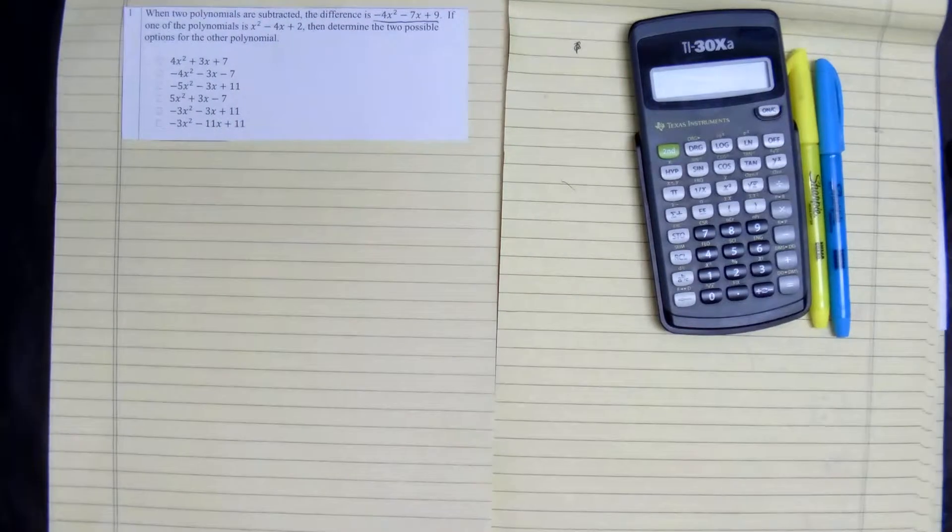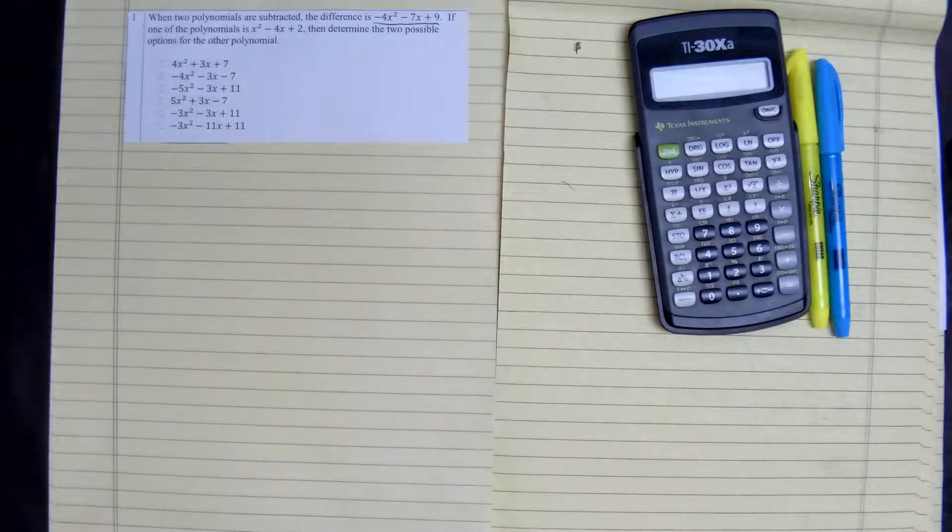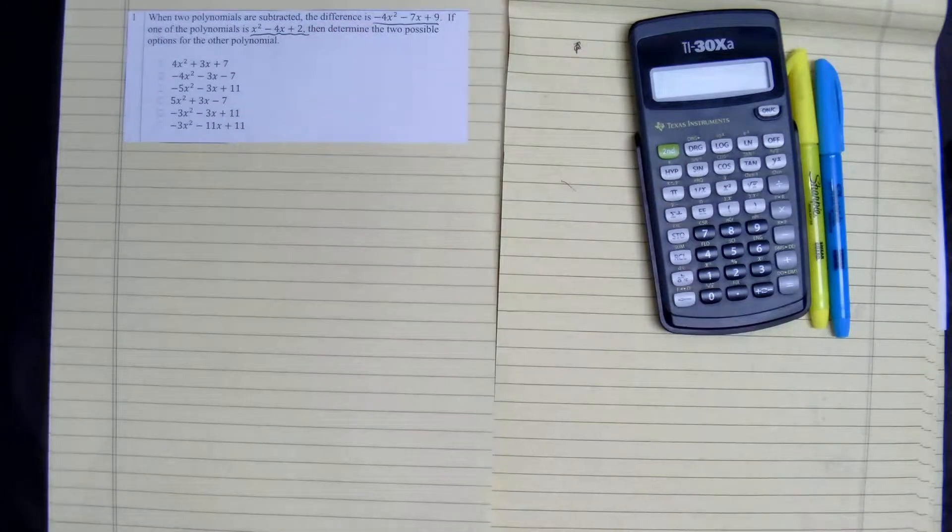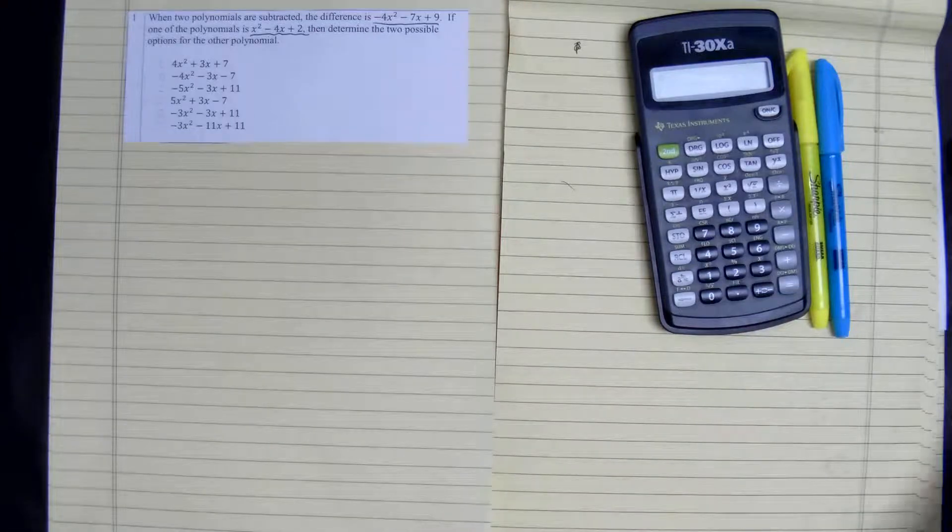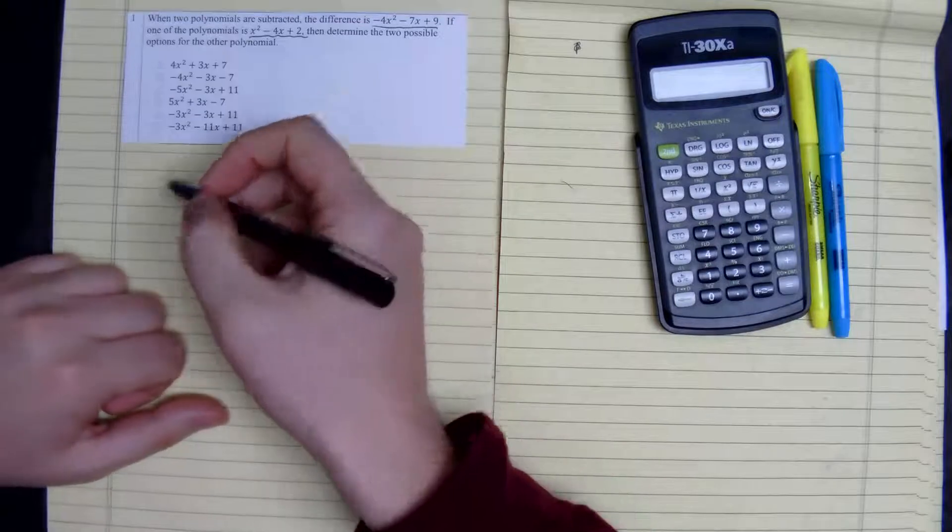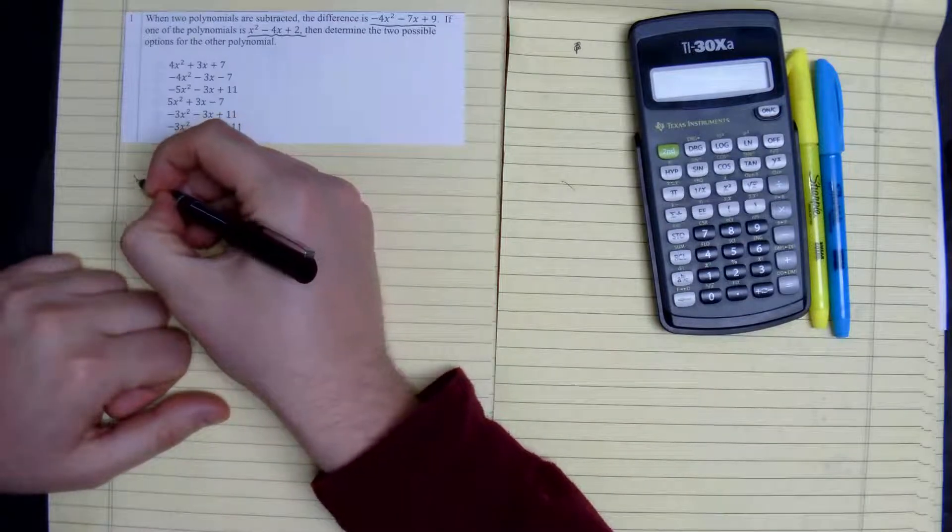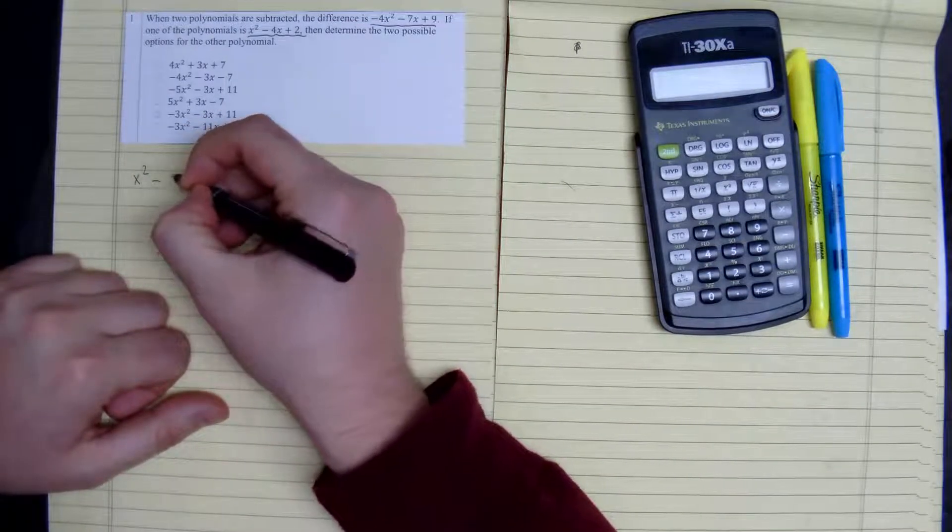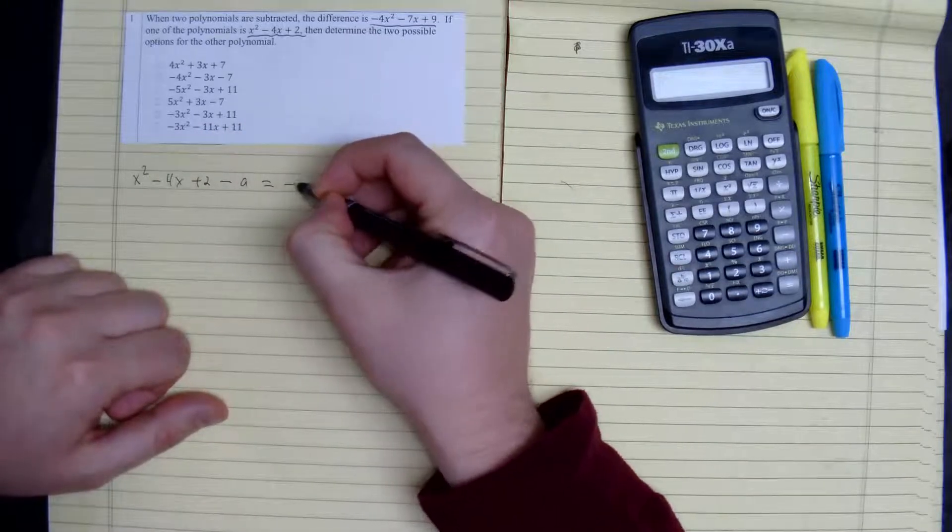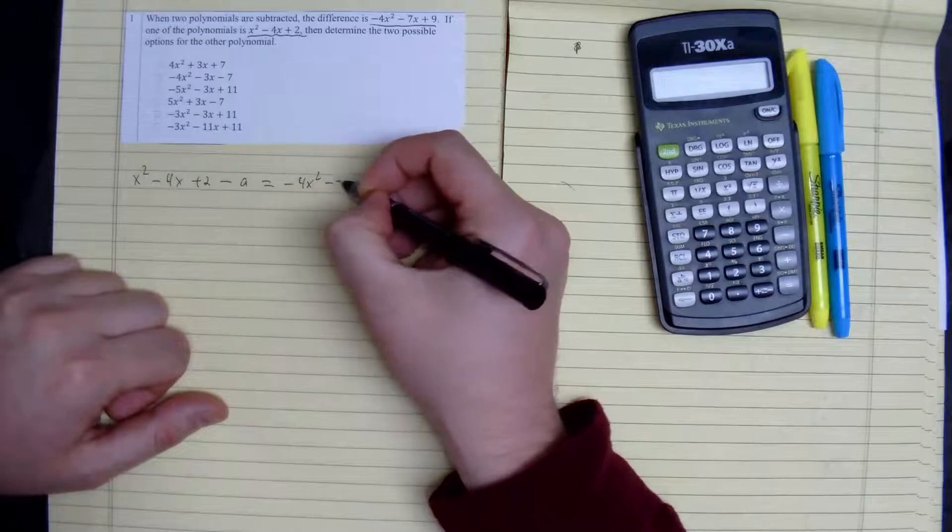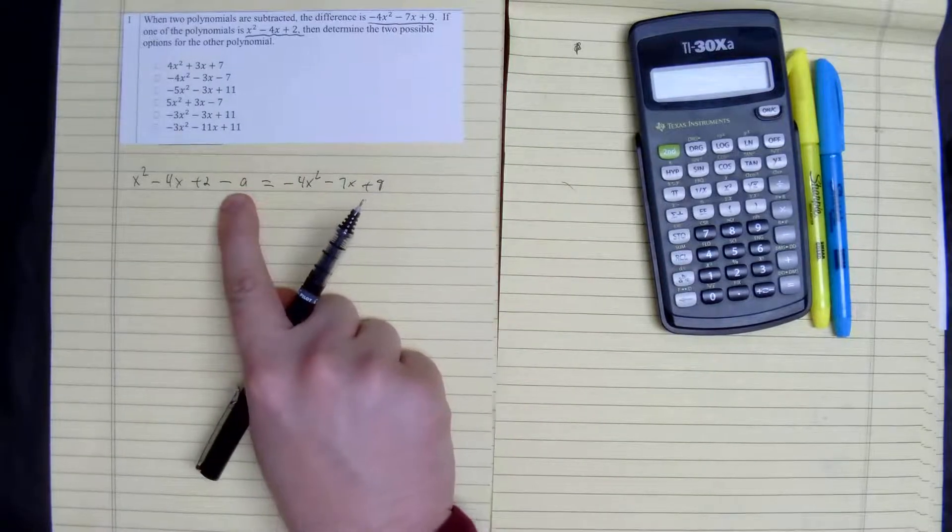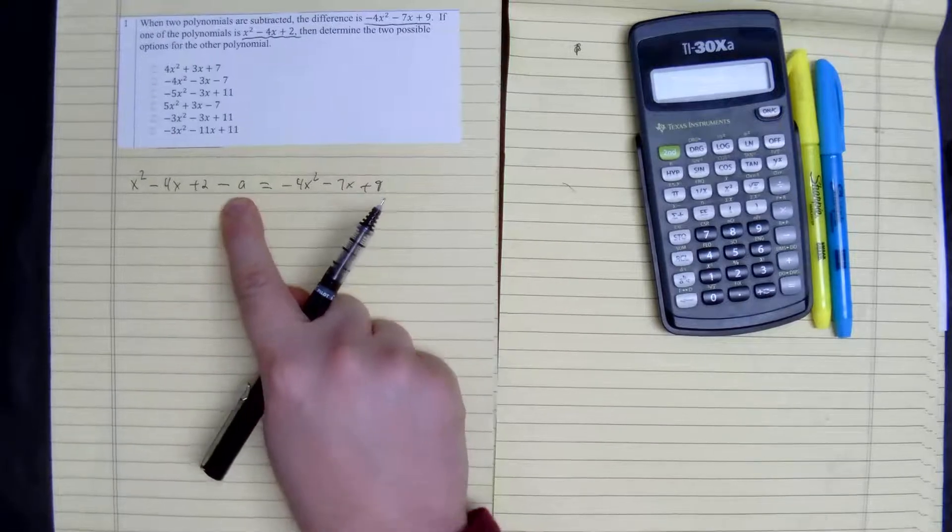Alright, so we're looking at this, and one of the polynomials has to be this. So we can set up two equations using this, and the first one we have is x squared minus 4x plus 2 minus equation A equals negative 4x squared minus 7x plus 9. So equation A is being subtracted, so that's our first one we have.